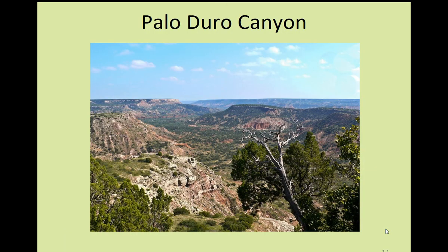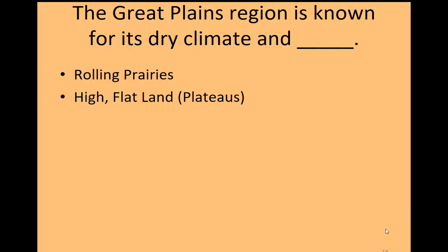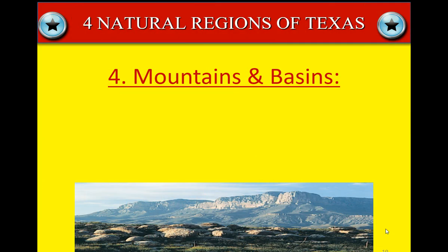Here's a photo of Palo Duro Canyon. The Great Plains region is known for its dry climate — is it rolling prairies, or high flat land otherwise known as plateaus? The answer is plateaus — high flat land.